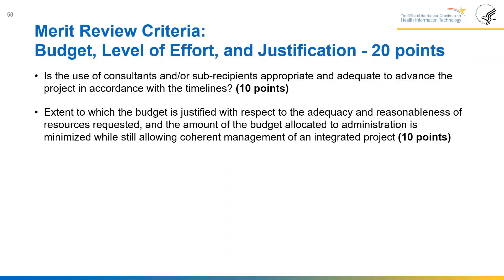Budget, level of effort, and justification (20 points total): whether the use of consultants or subrecipients is appropriate and adequate to advance the project in accordance with timelines — worth 10 points; and the extent to which the budget is justified with respect to adequacy and reasonableness of resources requested, with administrative costs minimized while still allowing coherent management of an integrated project — worth 10 points.